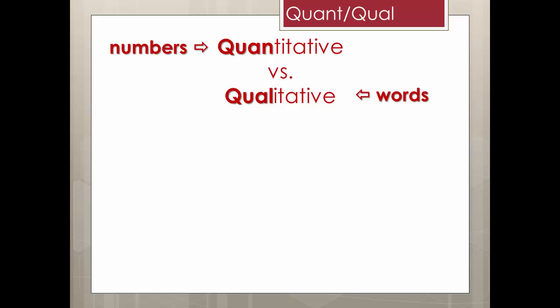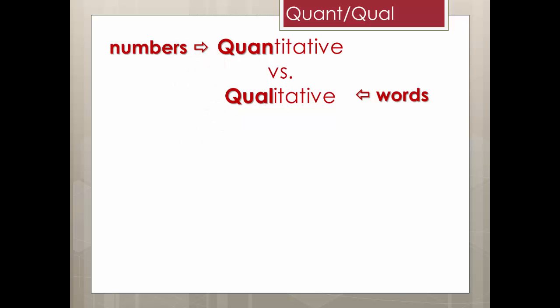Before we get to the different types of data collection methods, or research methods, that are traditionally used to gather qualitative and quantitative data, let me clear up a potential misunderstanding. It's how you use the data gathered that determines if it is qualitative or quantitative research. You can use a traditionally quantitative method to gather qualitative data, and, conversely, you can use a traditionally qualitative research method to collect quantitative data.